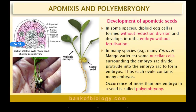Here you can see in the picture the integuments and the nucellus. Inside you can see the normal embryo alongside the nucellar embryo. In many citrus and mango varieties, some nucellar cells surrounding the embryo sac divide and protrude into the embryo sac to form embryos.